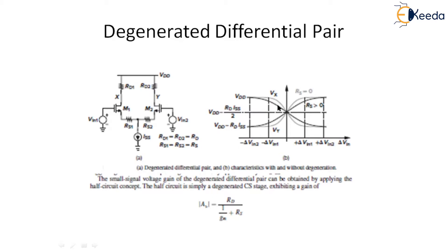The small signal voltage gain of the degenerated differential pair can be obtained by using a half-circuit concept. This half-circuit concept is simply the degenerated common source stage which exhibits a gain of Rd over 1 over gm plus Rd.